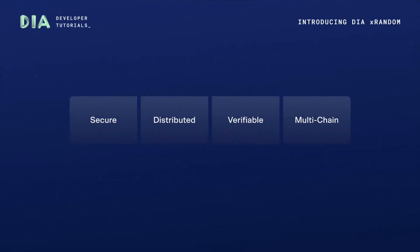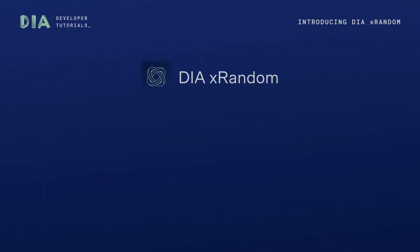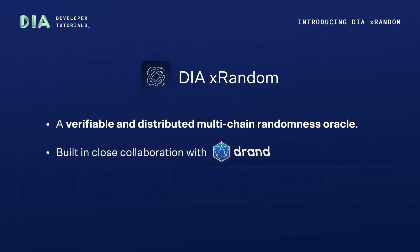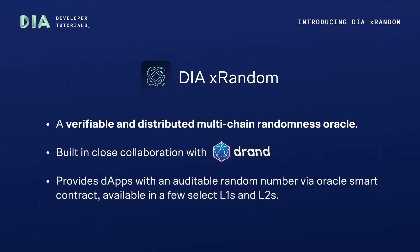In order to effectively serve the needs of Web3 applications, random number generation must be tamper-proof, distributed, publicly verifiable, and available on multiple blockchain networks. DRX Random is the verifiable and distributed multi-chain randomness Oracle. In close collaboration with DRAND, DRX Random provides dApps with an auditable random number via Oracle smart contracts, available in a few select L1s and L2s.